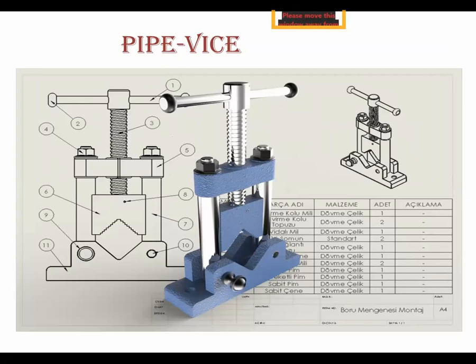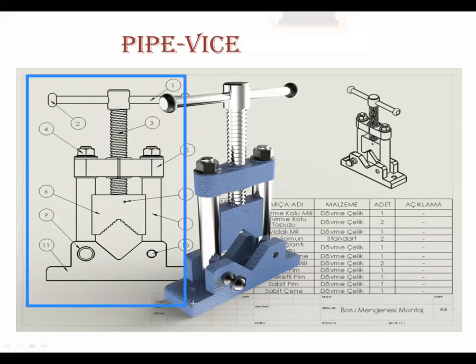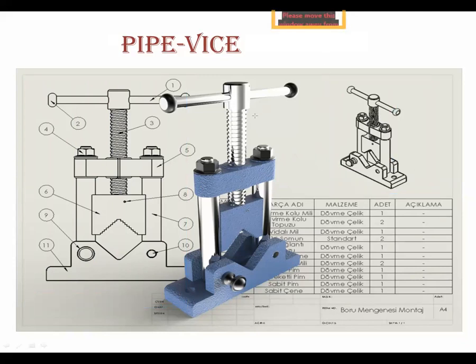The next topic is pipe vise. A pipe vise is again used for holding the job. Here a diagram is given — a 2D diagram of pipe vise, a 3D diagram, and a photograph of the actual object is also given.